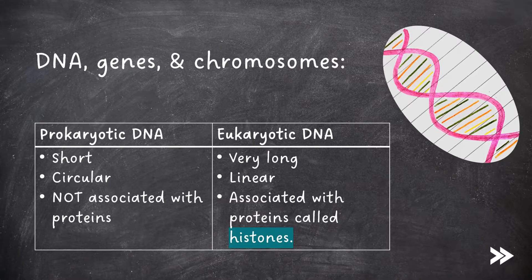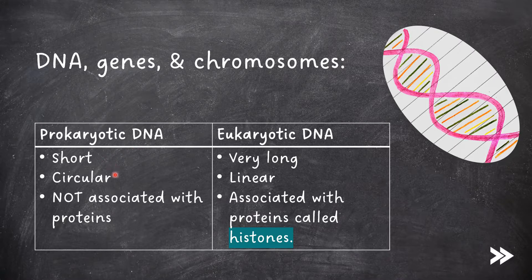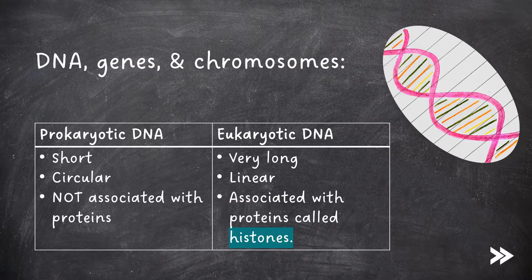There are three main facts that you should know for each type of DNA, and you should be able to compare the two types in exams. For prokaryotic DNA, it's the fact that it is short, circular, and not associated with proteins. Eukaryotic DNA, on the other hand, is very long, linear, and associated with proteins called histones. Remember that when asked to compare in exams, you should always mention both things which you're comparing — for example, prokaryotic DNA is short whereas eukaryotic DNA is very long, or prokaryotic DNA is circular but eukaryotic DNA is linear.